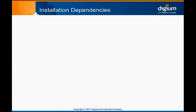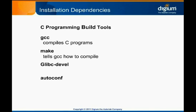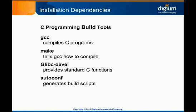The first set of packages we need to ensure are present on our system are the basic build tools necessary to compile anything written in the C programming language. These don't have any special relationship to Asterisk — they're just there to turn the raw source code of Asterisk into executable binaries. This set includes gcc, make, glibc-devel, and autoconf. gcc is responsible for compiling the source code, while make is used for initiating the compiling. glibc-devel is a library of standard functions for C programs, and autoconf will generate the configuration scripts for building. These all have their own dependency requirements, but YUM usually installs them automatically.